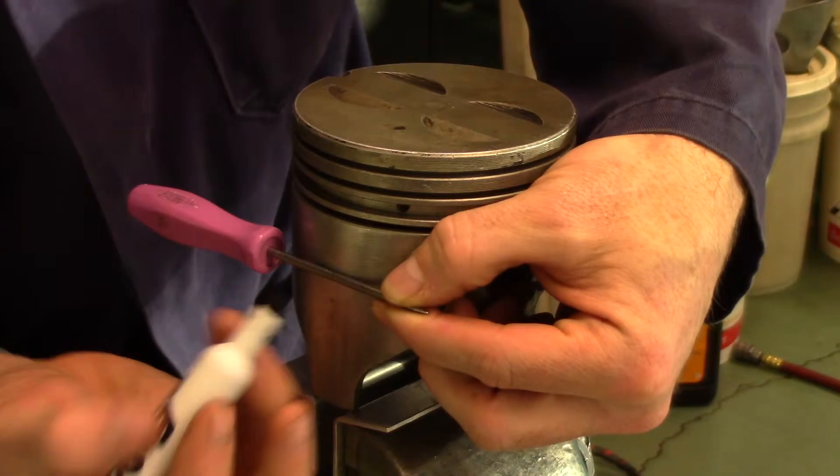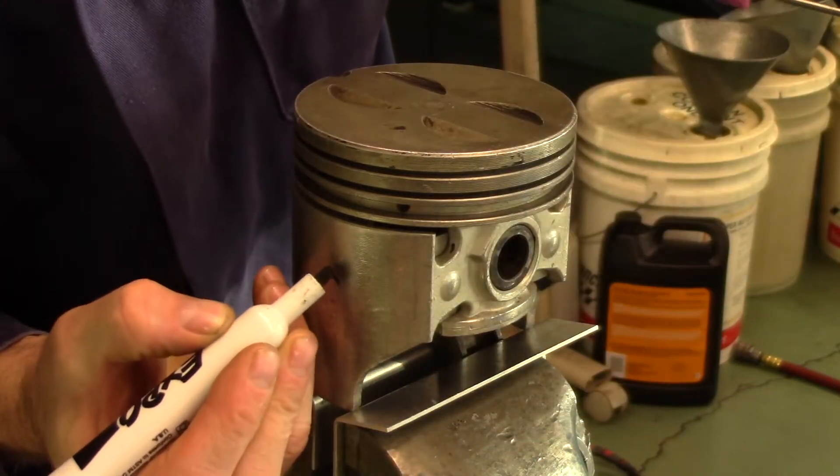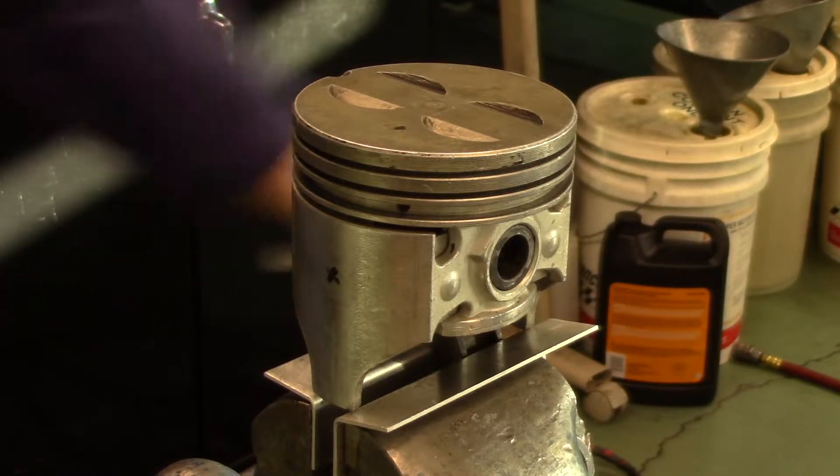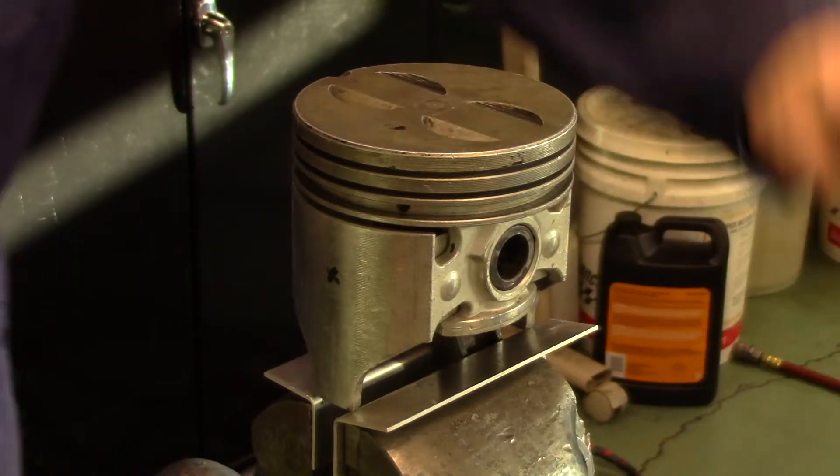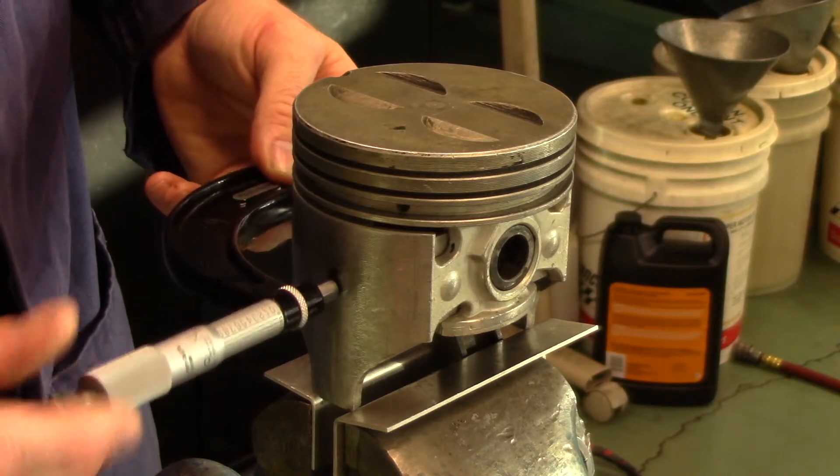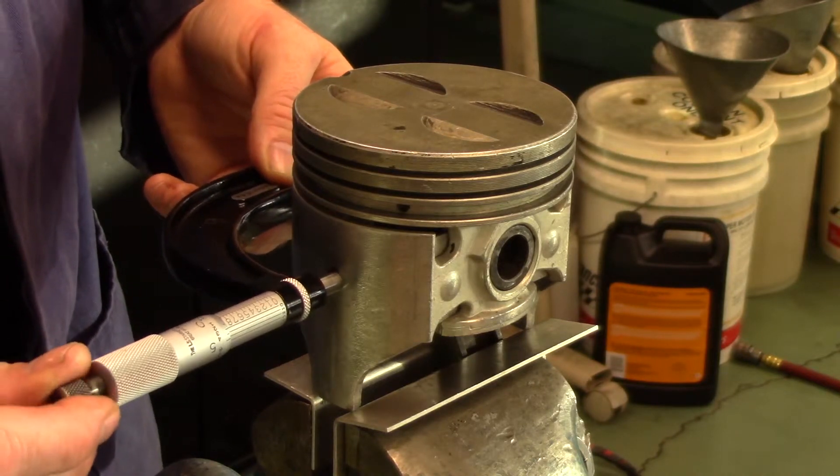In the direct method we will simply measure the piston at the point indicated by the piston manufacturer. In this example the manufacturer requires the measurement to be at the same height as the center line of the piston pin bore along the major and minor thrust sides.